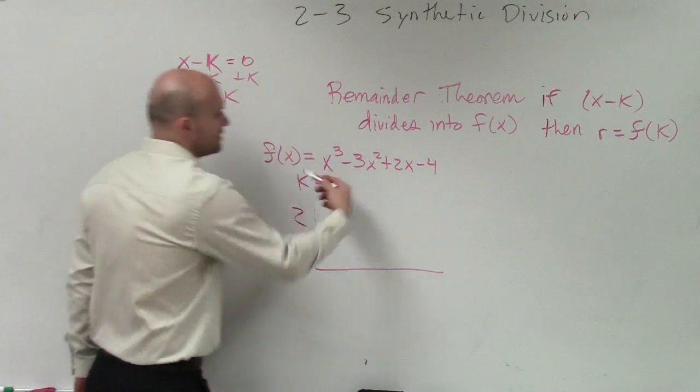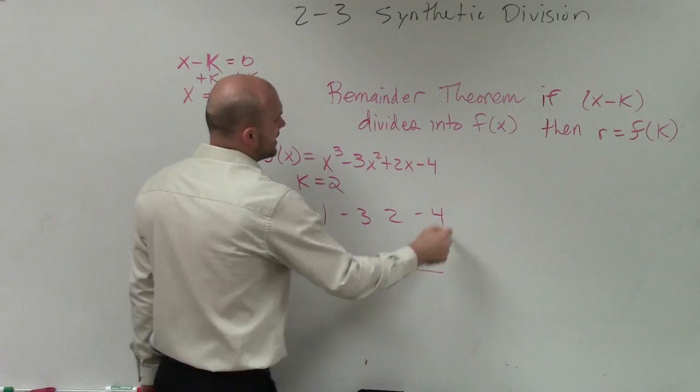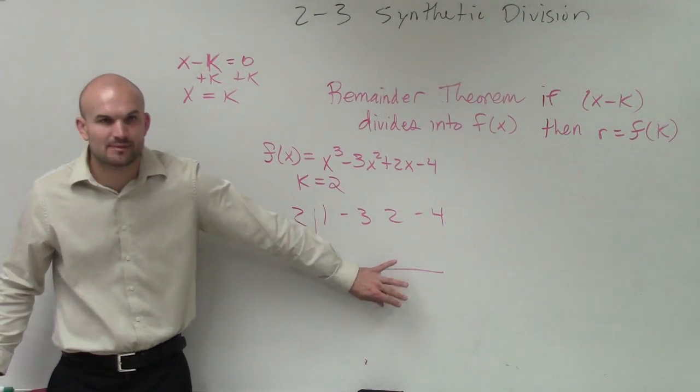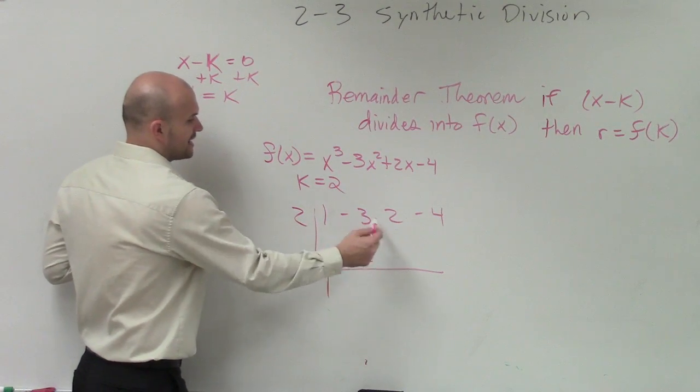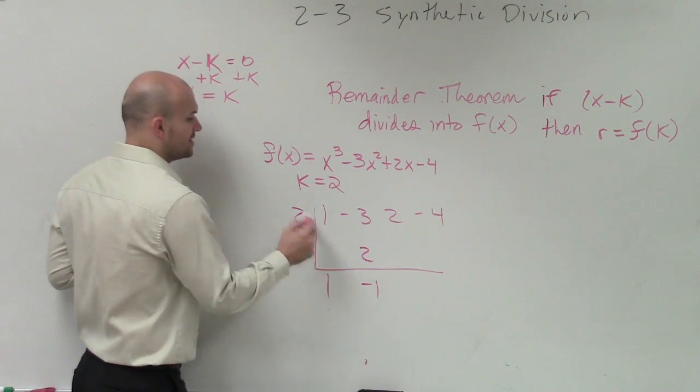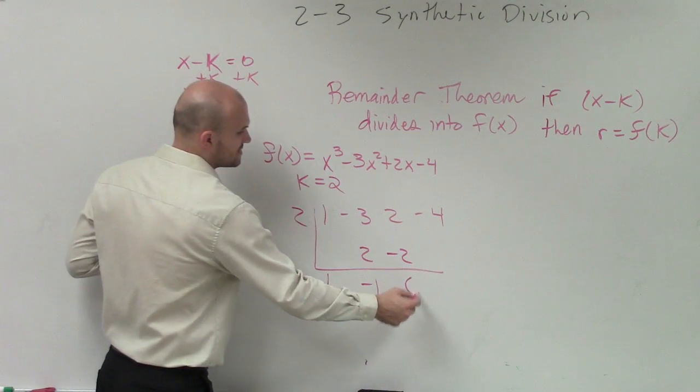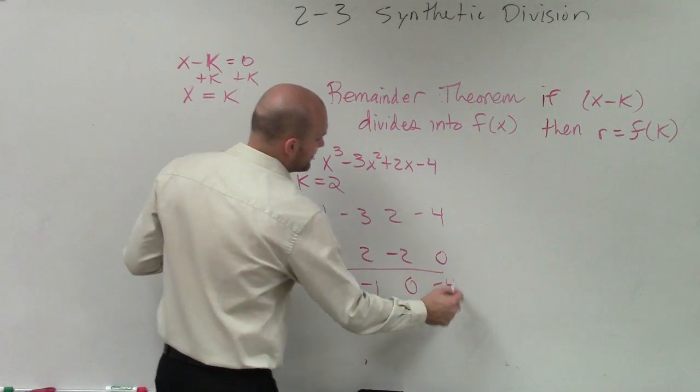Two. Now we take the coefficients, right? One, negative three, two, negative four. So I'm going to work this through a little bit quicker, because synthetic division is not the main purpose of the video. Bring down the one. One times two is two. Negative three plus two is negative one. Negative one times two is negative two. Two plus negative two is zero. Zero times two is zero. Negative four. Uh-oh,